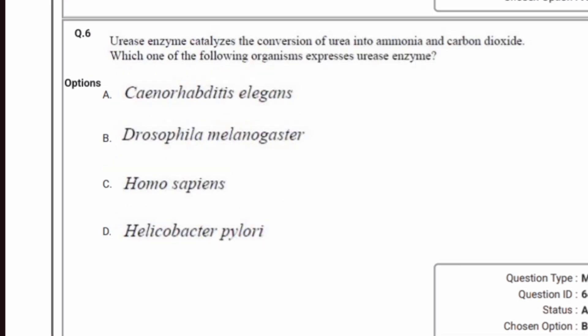In this question, they asked: urease enzyme catalyzes the conversion of urea into ammonia and carbon dioxide — which one of the following organisms expresses urease enzyme? The options are Caenorhabditis elegans, Hepatitis, Drosophila melanogaster, Homo sapiens, and Helicobacter pylori. The correct answer is Helicobacter pylori, option D.